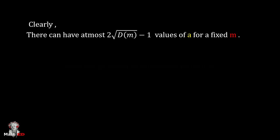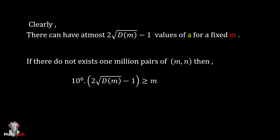Now we should proceed to prove the contradiction. If there do not exist one million pairs of (m,n), then 1 million × (2√D(m) - 1) will be greater than or equal to m.